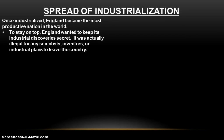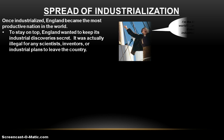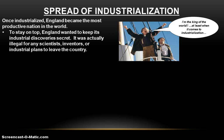Once industrialized, England becomes the most productive nation in the world with their new machines, their new innovations, their factory system. They're producing more goods faster and more efficiently, which means more money. And more money, of course, means more power. England is the most productive nation in the world, and they want to stay that way.